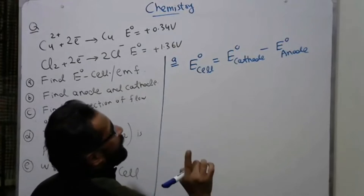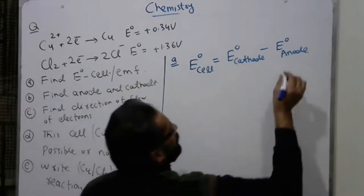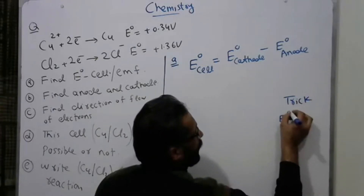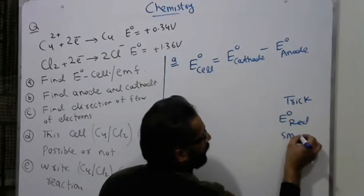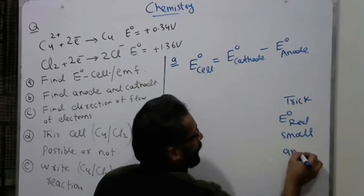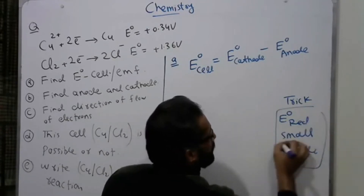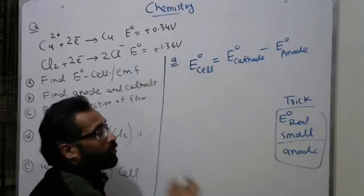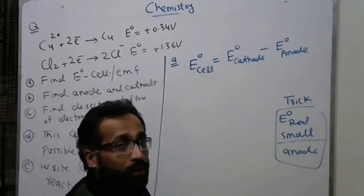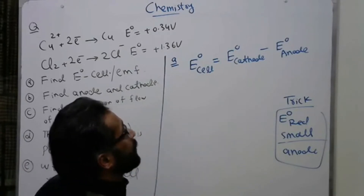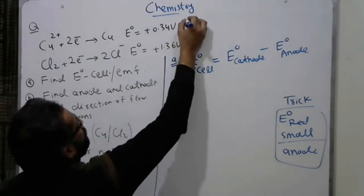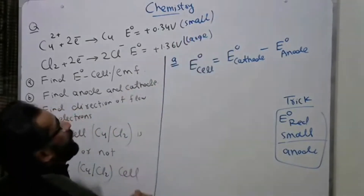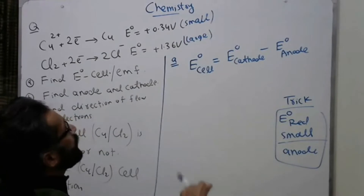First identify cathode and anode. The trick is: the electrode with the smaller E° value is the anode, and the electrode with the larger E° value is the cathode. The small value here is copper (0.34V) and the large value is chlorine (1.36V). So copper is the anode and chlorine is the cathode.